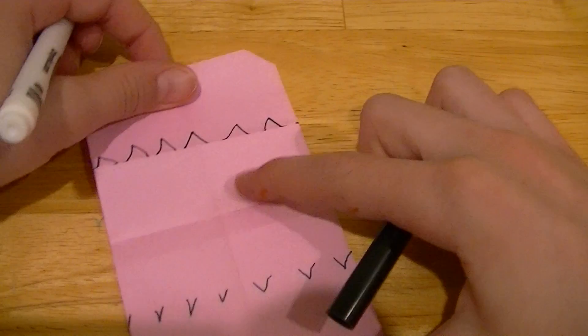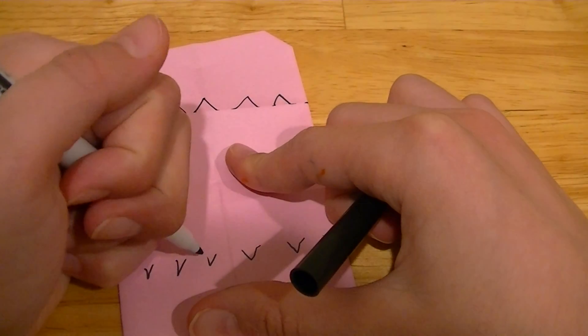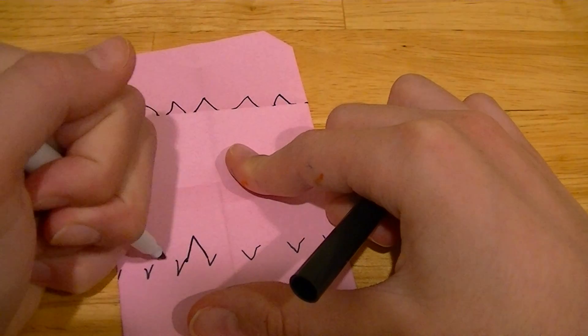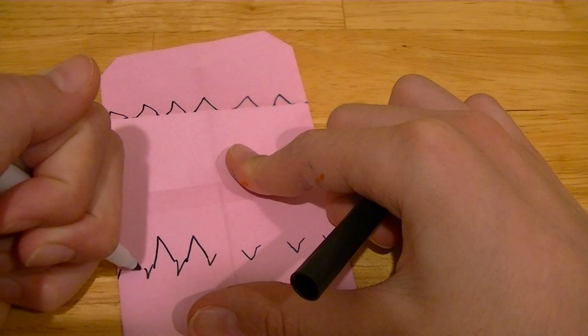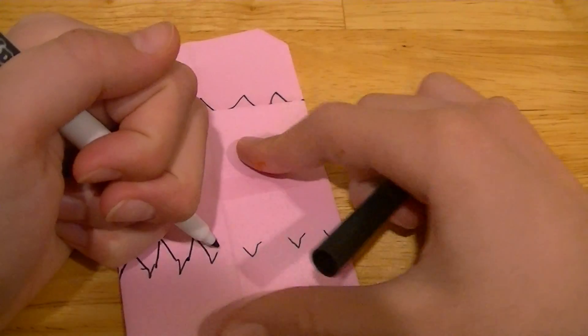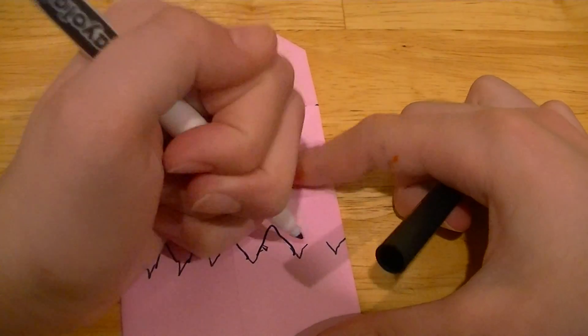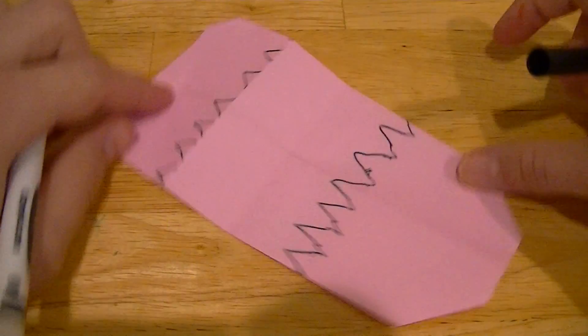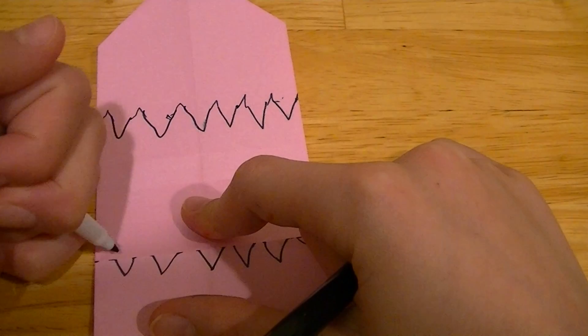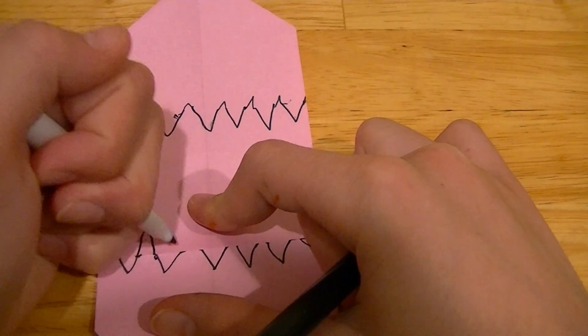And then you can unfold this here, and you should be left with this. And then you can just connect these folds here. And you have this side done here. And then you can do the same right here.